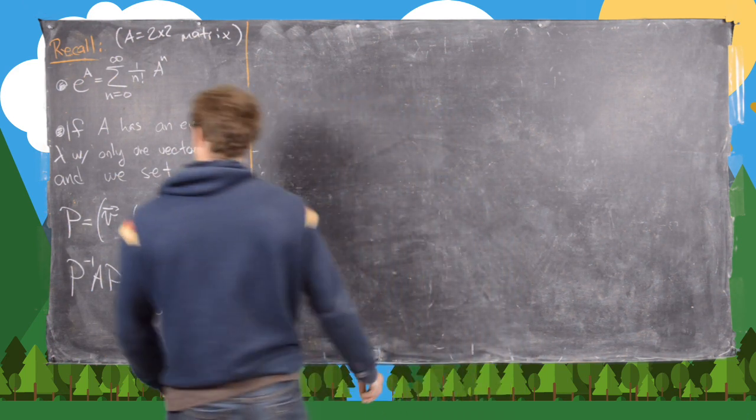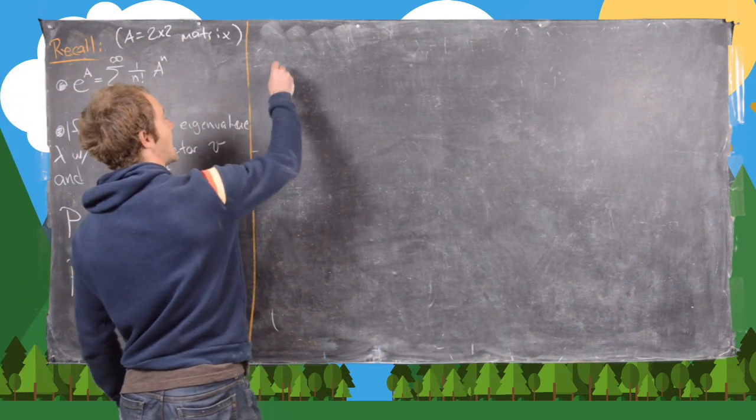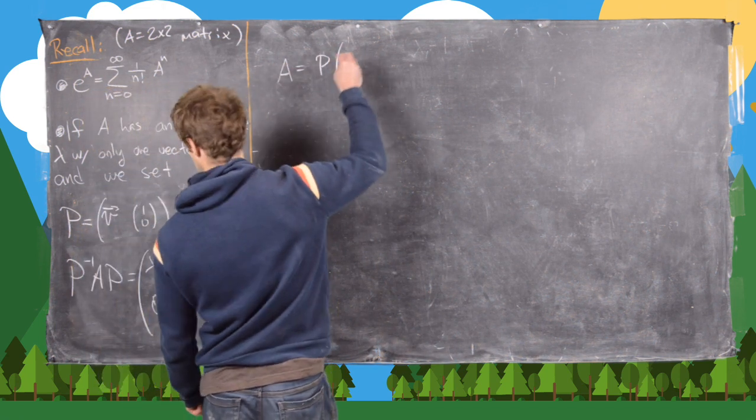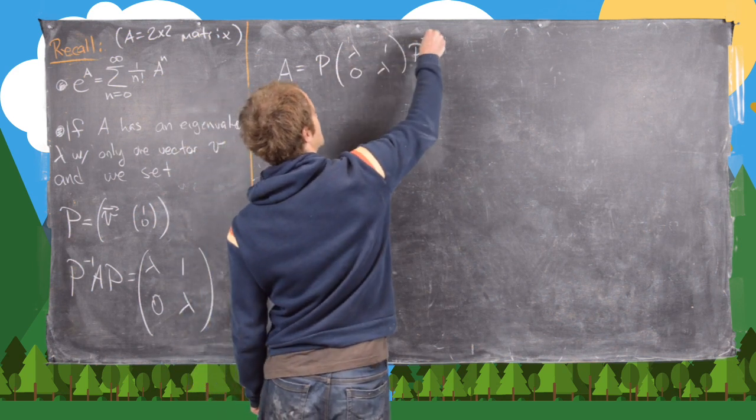Good. So now, let's go ahead and notice that this means that A equals P times [λ, 1; 0, λ] times P inverse.